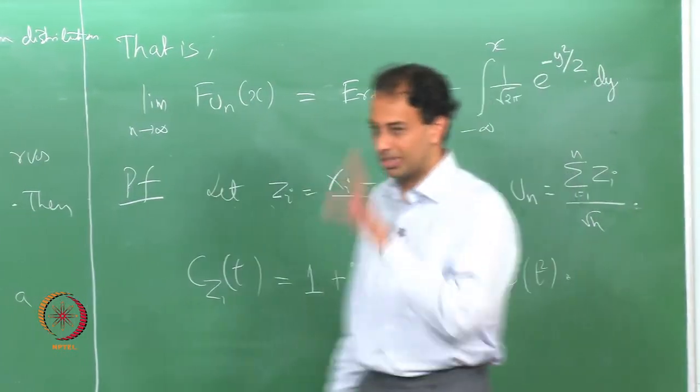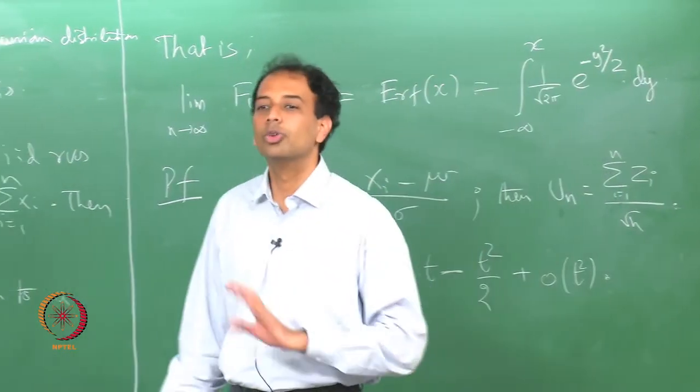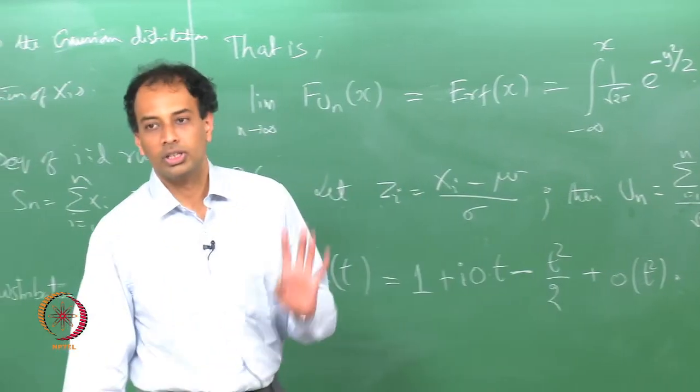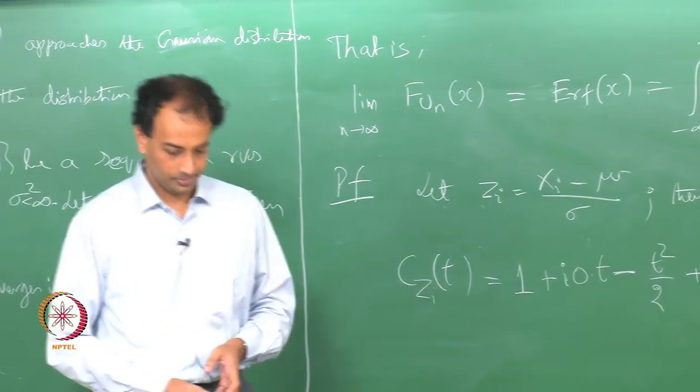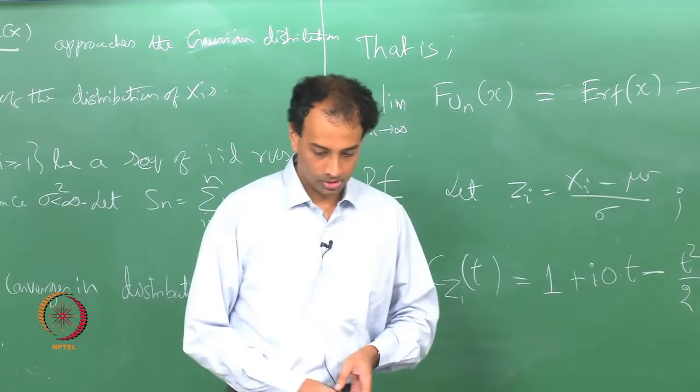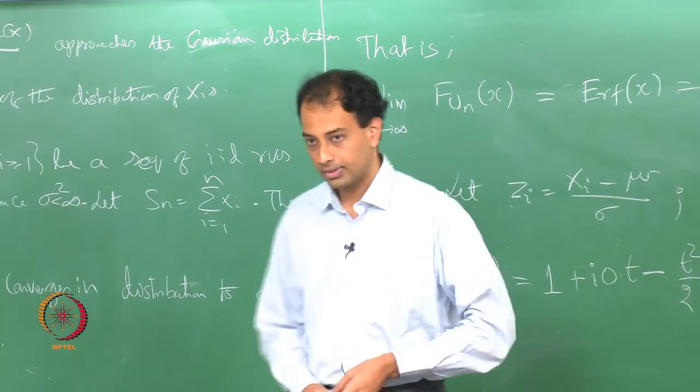This is the simplest and most complete proof of the central limit theorem for the IID case.